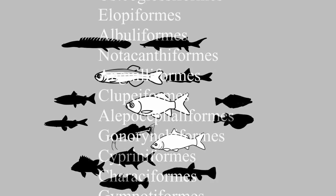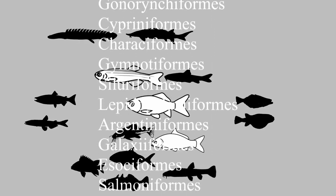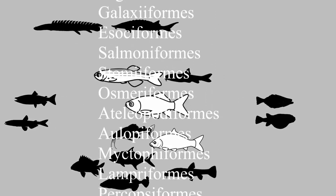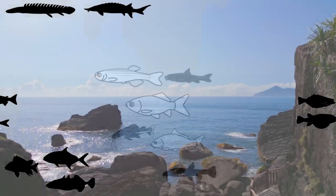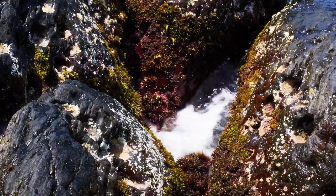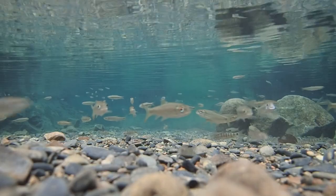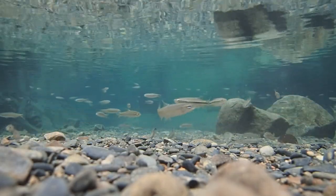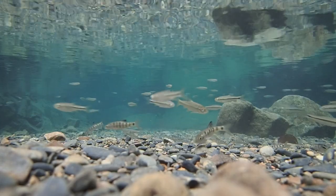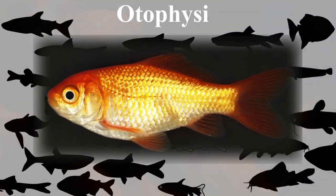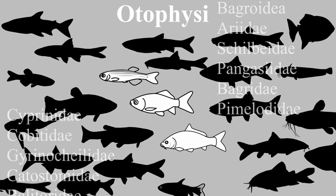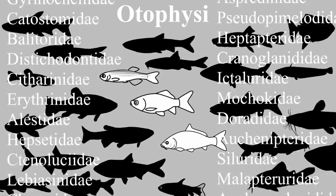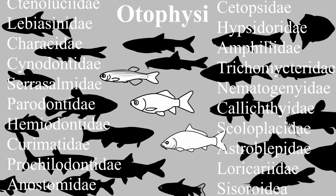Ray-finned fish are further classified into different groups, each containing many species. The Teleost group in particular has significantly increased in species number, and Teleost species have adapted and spread into almost every region of surface and underground water on Earth. Taxonomists classify highly diverged Teleost species into similar taxa, and goldfish belong to the Otophysi group, which contains approximately 8,000 to 10,000 Teleost species.